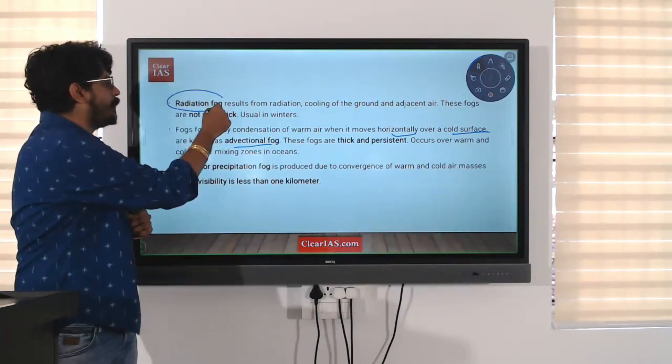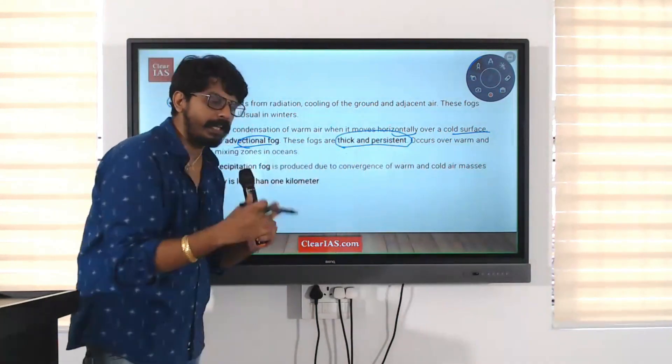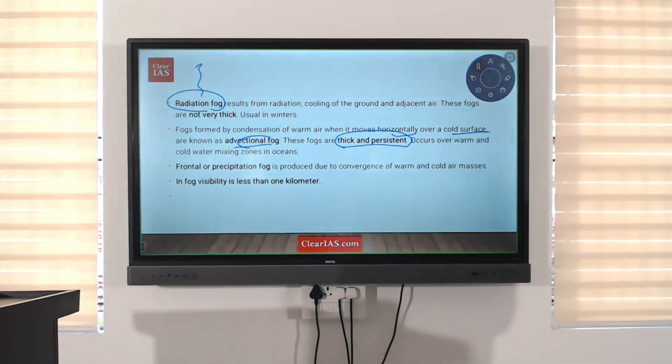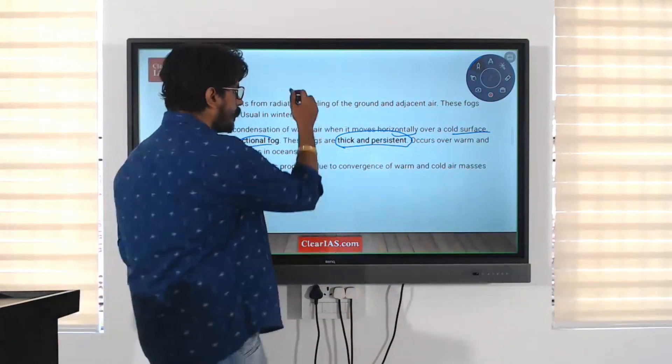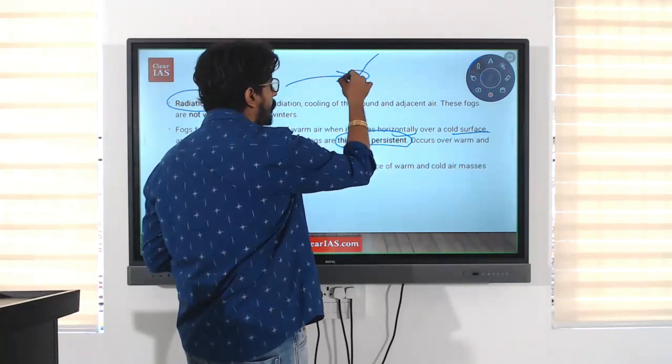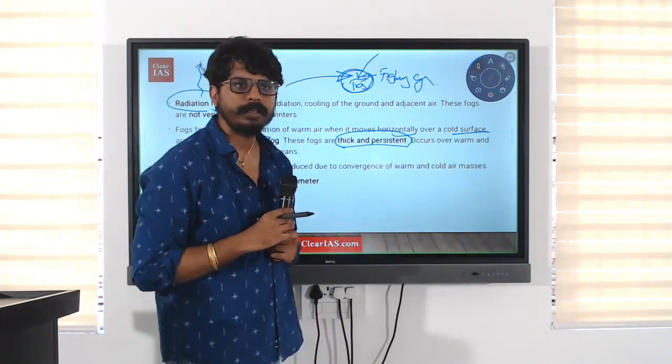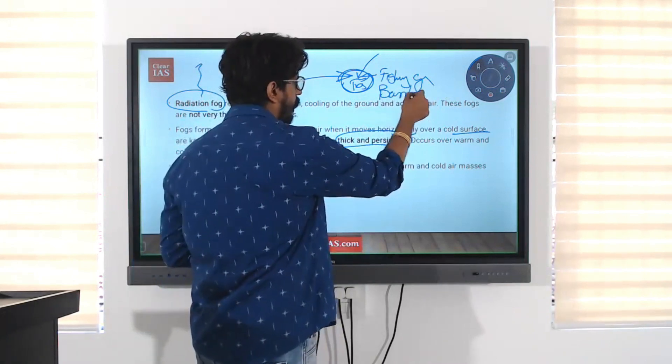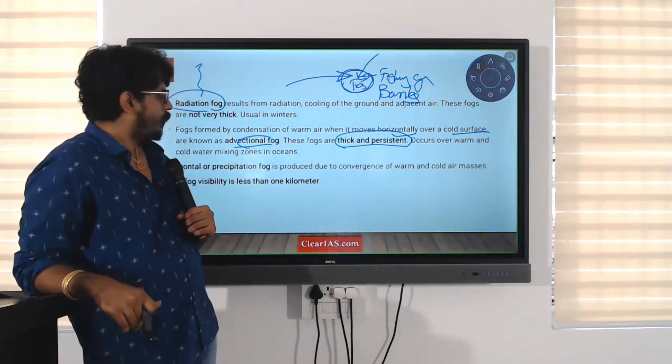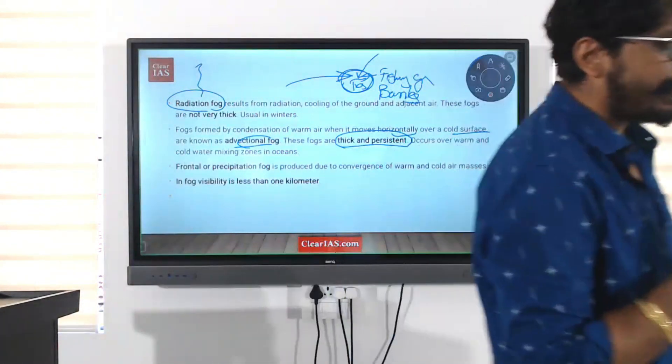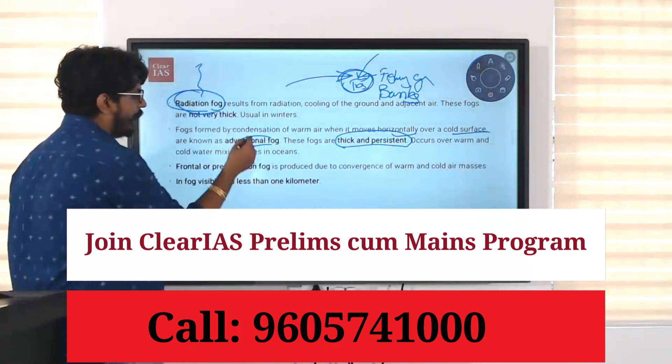Now, comparative to radiation fog. Radiation fog will disappear easily. It is not that thick. But advection fogs are very, very thick and persistent means they last for a long time. So, this is another difference they will ask. Advection fog are more thick and persistent. And in oceanography, we will be studying where warm ocean currents and cold ocean currents meet. Such fogs will be formed and these are very, very interesting fishing grounds. We call them as banks, fishing banks. Dodger bank, grand bank, all these examples we will be studying in oceanography. So, write down. Occurs over warm and cold water mixing zones in ocean. So, we have studied two types of fogs. Radiation fog, advection fog. Right?